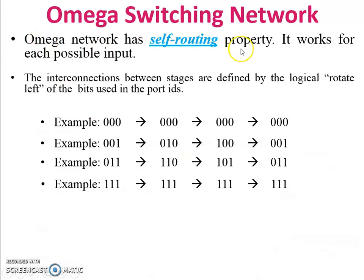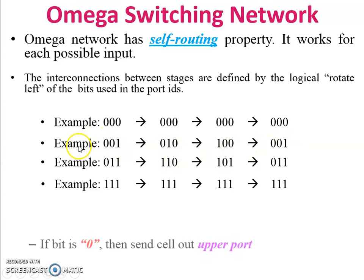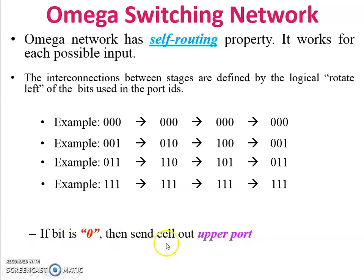The omega network has a self-routing property. It works for each possible input. The interconnection between stages is defined by the logical rotate-left of the bits used in the port IDs. For example, 001 is connected to 010, which is connected to 100, which is again connected to 001 — this is the rotate-left pattern. If the bit is zero, send the cell to the upper port of the switch; if the bit is one, send the cell to the lower port of the switch.